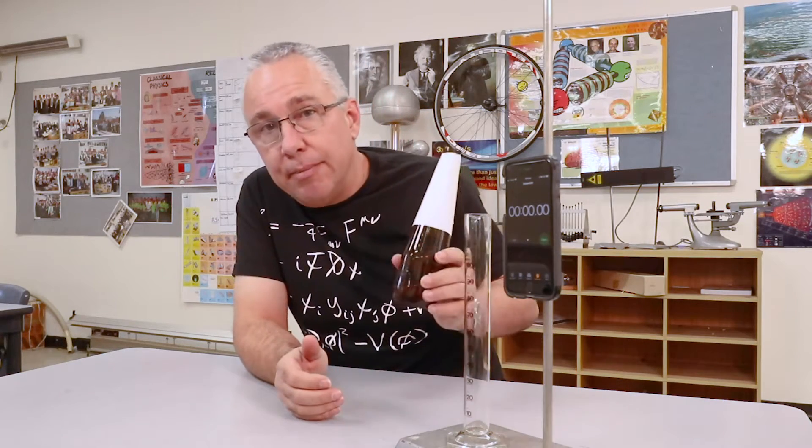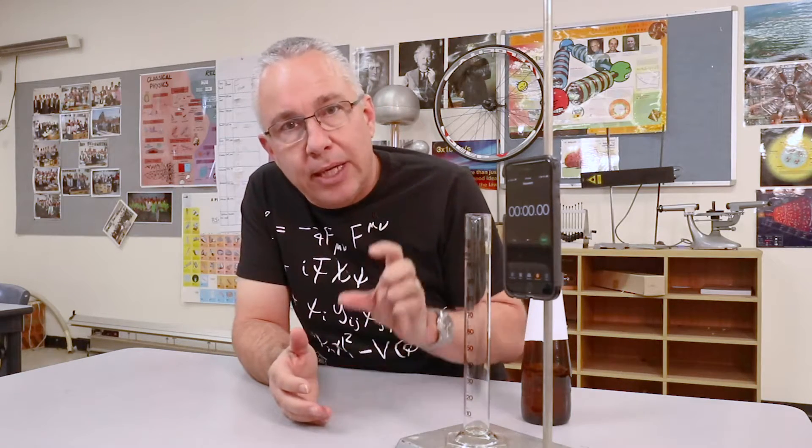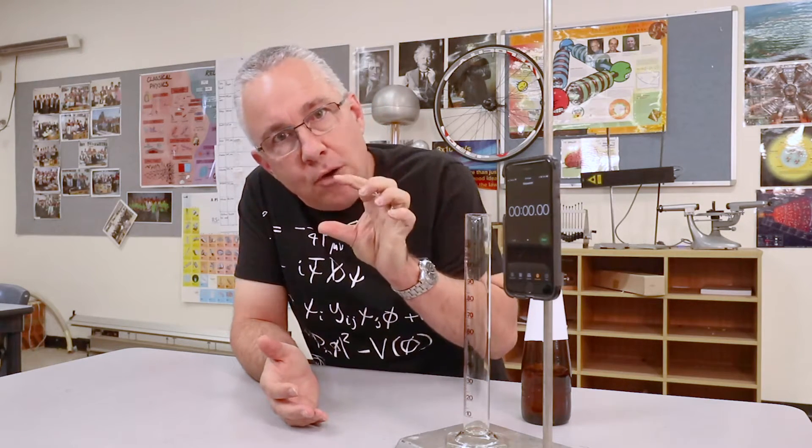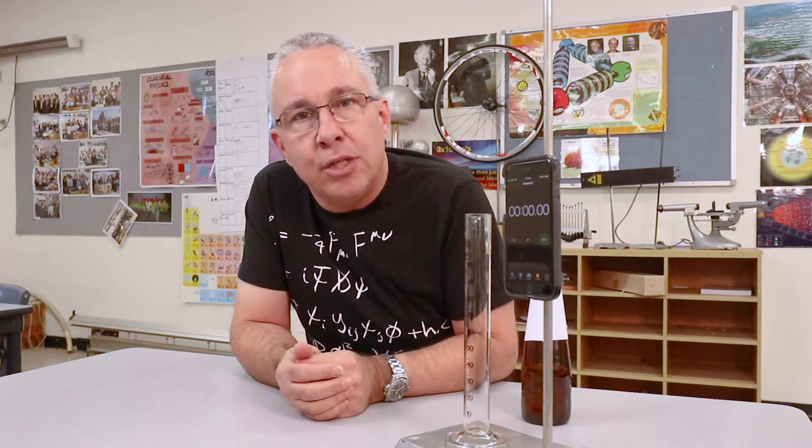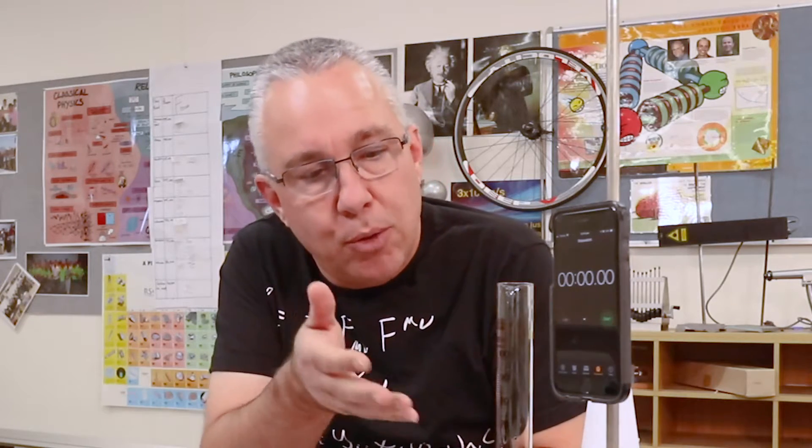What I have here is a measuring cylinder and some beer. You may or may not be aware that when we pour beer, we get this layer of foam, often referred to as the head of the beer. But of course, over time, that foam size decreases. The question I have for you is: what is the rate at which that decreases? Is it a linear decay or an exponential decay? We're going to pour some beer in here and measure the size of the foam by simply looking at the gradations of my measuring cylinder with respect to time. Then we're going to analyze the data. So let's start the process going.